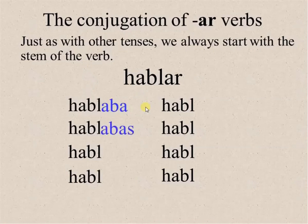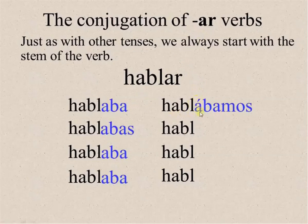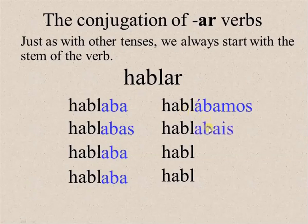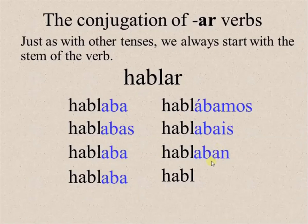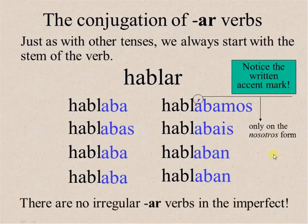Yo hablaba. Tú hablabas. Él hablaba. Ella hablaba. Usted hablaba. Nosotros hablábamos — make sure you put an accent mark on the nosotros form. Vosotros hablabais. Ellos, ellas hablaban. Ustedes hablaban. Notice the written accent mark only on the nosotros form. There are no irregular AR verbs in the imperfect — that's good news for us.